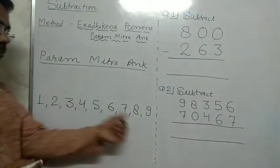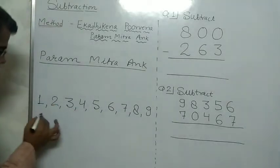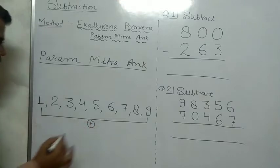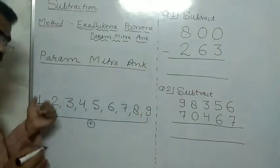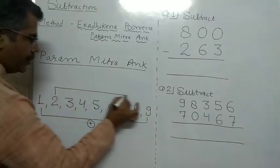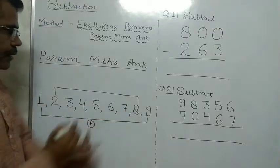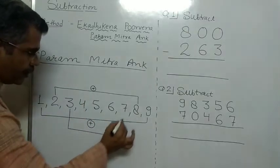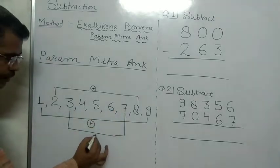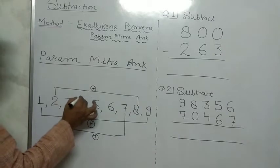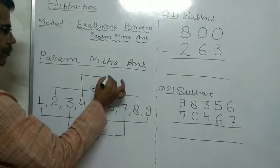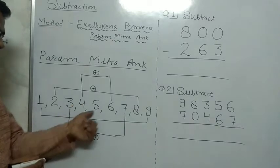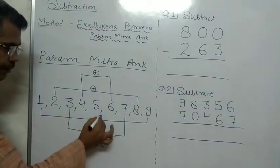If the sum of two numbers is 10, then they are each other's Pramikkar Ankh. So: 1 plus 9 is 10, meaning Pramikkar Ankh of 1 is 9 and of 9 is 1. Pramikkar Ankh of 2 is 8 and of 8 is 2. Pramikkar Ankh of 3 is 7 and of 7 is 3. Pramikkar Ankh of 4 is 6, of 6 is 4, and Pramikkar Ankh of 5 is 5.